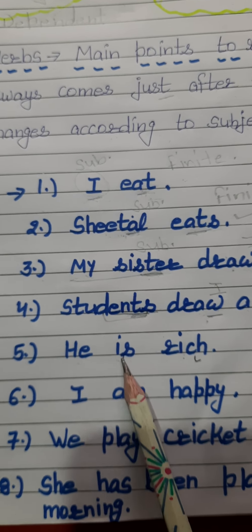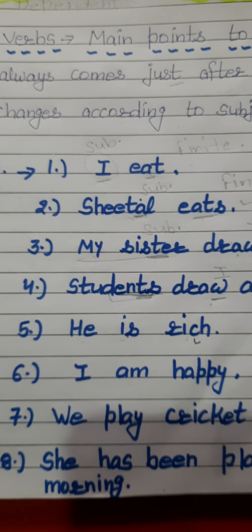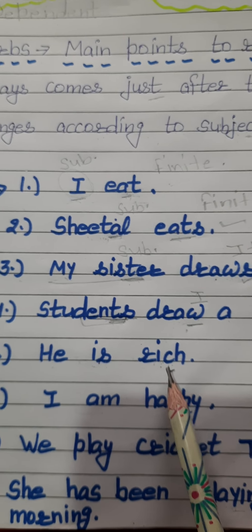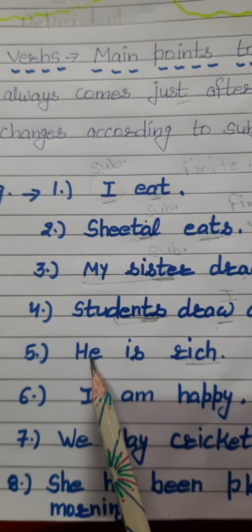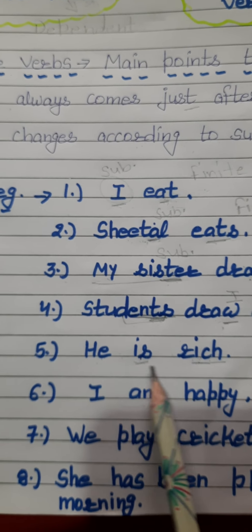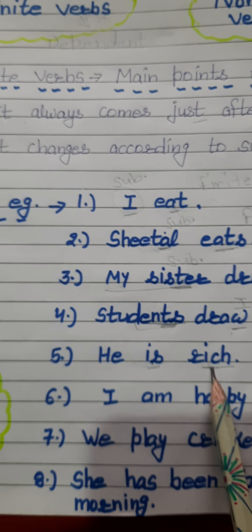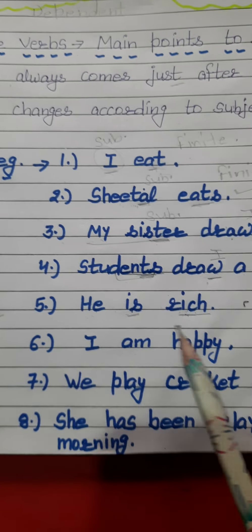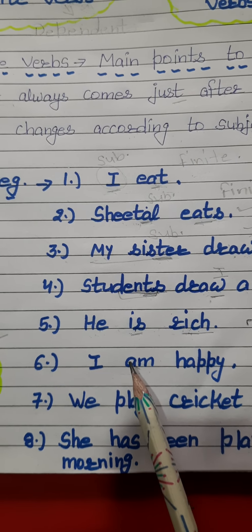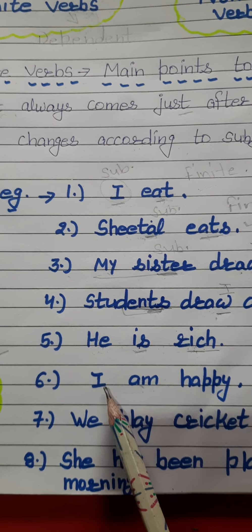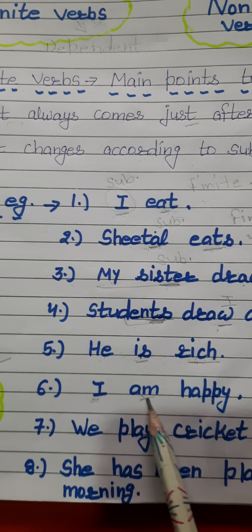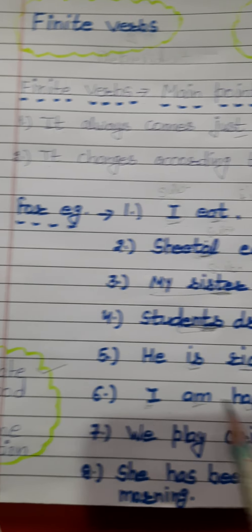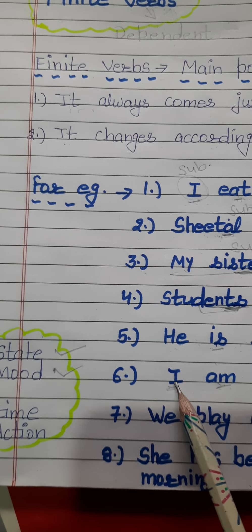Next: 'He is rich.' Here we are getting to know about the state of a person — that he is rich. 'He' is the subject and 'is' is the finite verb. So finite verbs also tell us about the state of a person. Next: 'I am happy' — 'I' is the subject and 'am' is the finite verb, telling us about the mood of the subject.